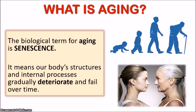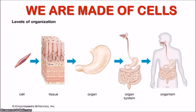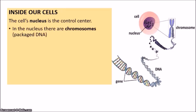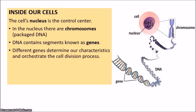But what really causes this deterioration in our bodies? The process of aging all comes down to our cells and their functions. Our bodies are made of trillions of cells which organize themselves into tissues and organs to perform different functions to sustain our lives. Our cells contain a nucleus, which acts as the control center containing DNA packaged in chromosomes. DNA has special segments called genes which determine our characteristics and orchestrate all the activities in our bodies, including cell division.